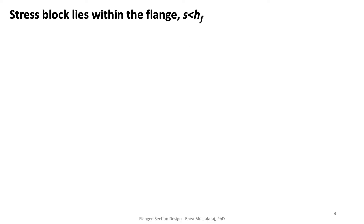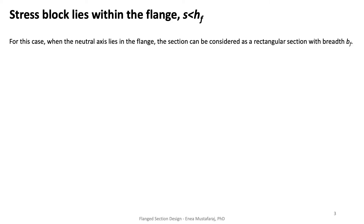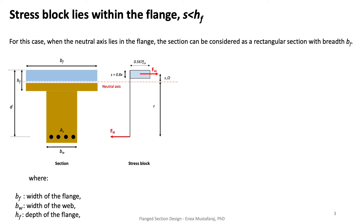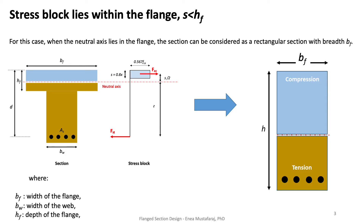Let's come back to the first case where the stress block lies within the flange. For this case where the neutral axis lies in the flange, the section can be considered as a rectangular section with a breadth of BF. So basically this T-shape can be converted into a normal rectangular section, with BF as the width and the overall depth of the T-section as the other dimension.